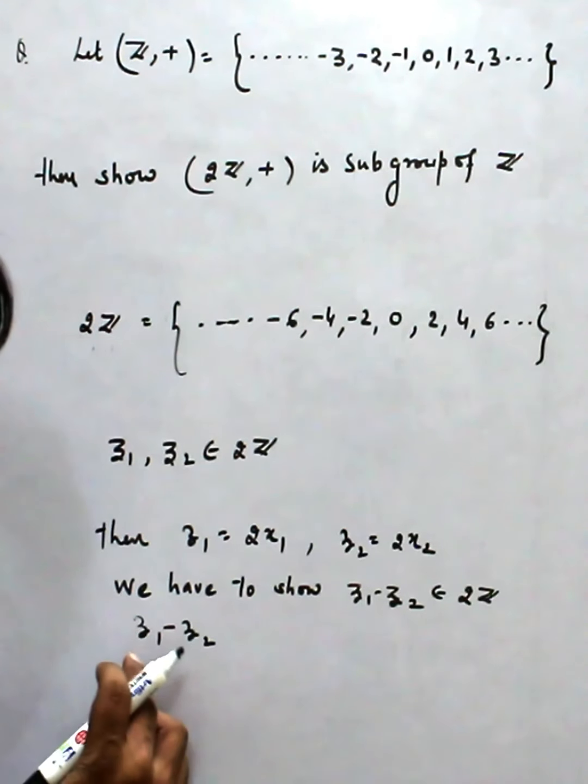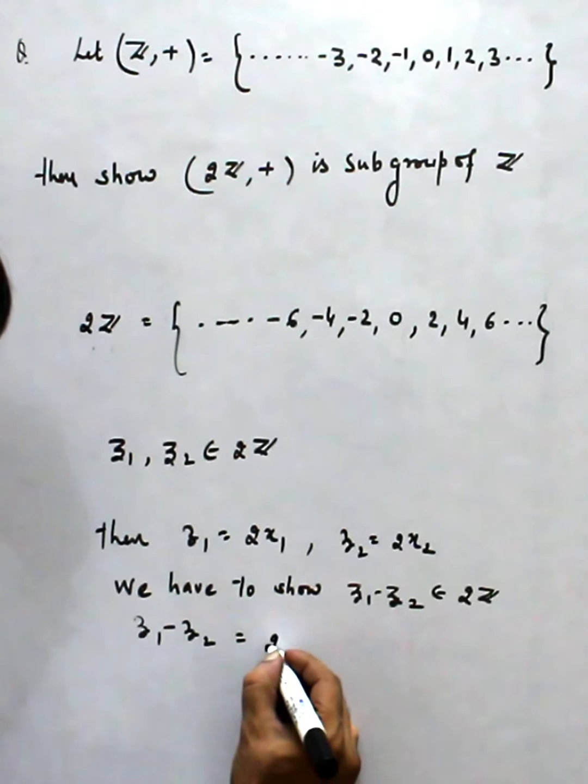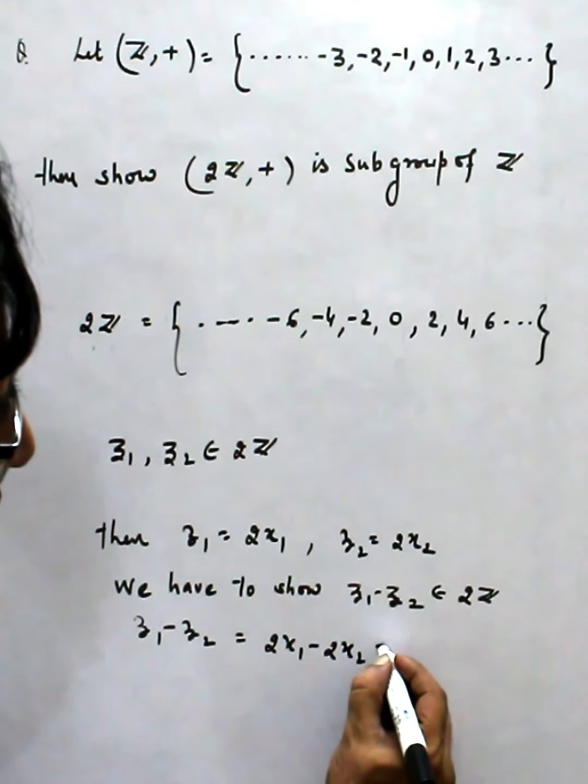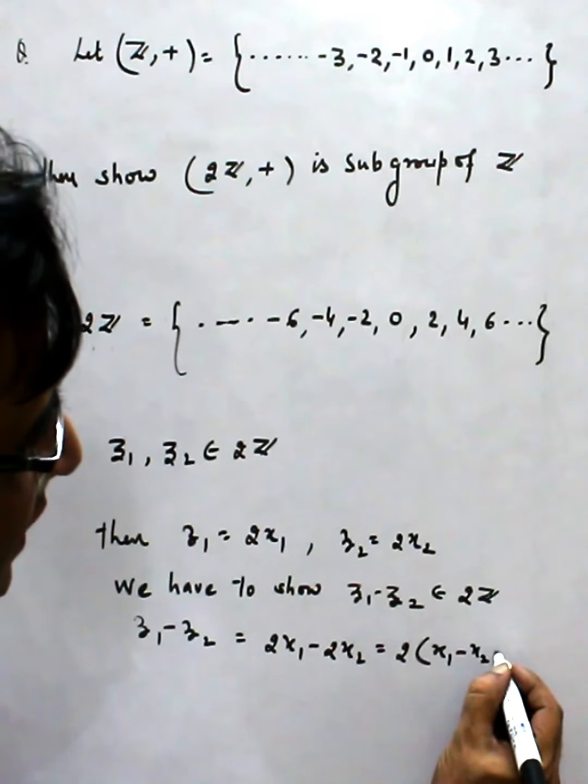We have to show this, so we consider Z1 minus Z2 equals 2X1 minus 2X2, that is 2(X1 minus X2).